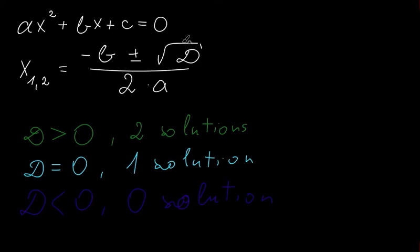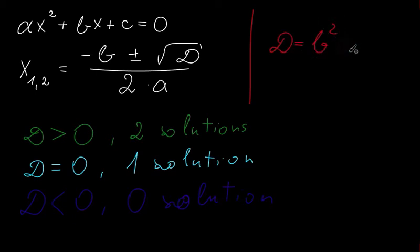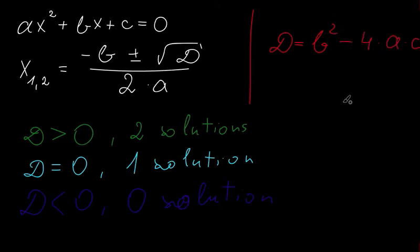Now, how to calculate our discriminant. The formula to calculate the discriminant looks like this: b² minus 4 times a times c. That is the formula for our discriminant.